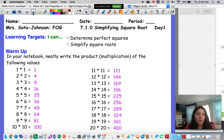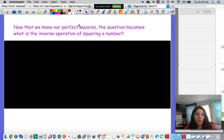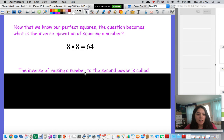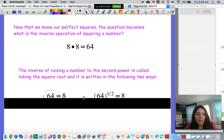Okay, so we have learned about our perfect squares. Now what happens when we want to figure out the inverse operation of squaring a number? Well we're going to learn about finding the square root of a number.